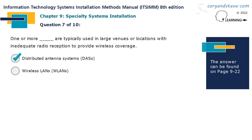One or more distributed antenna systems, or DASs, are typically used in large venues or locations with inadequate radio reception to provide wireless coverage.